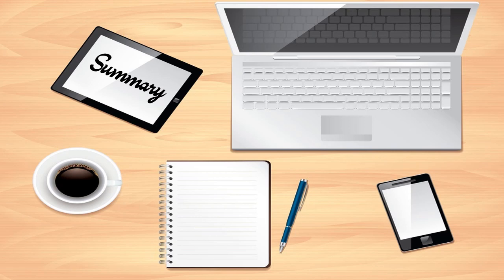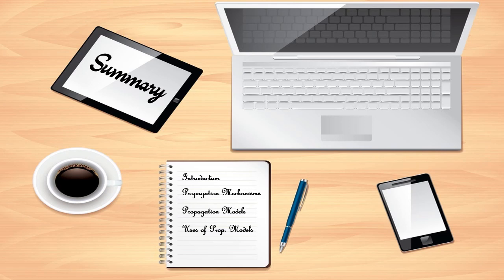To sum up, in this video we covered an introduction to wireless communication as a brush-up, the propagation mechanisms — reflection, diffraction, and scattering — and the propagation models along with their types and uses. Propagation models make it easy to plan, decide, and maintain wireless communication systems. We also covered small-scale fading and large-scale fading. The remaining concepts will be posted as separate videos, so please check out the channel for more interesting technical videos and consider subscribing. Thank you — happy learning!